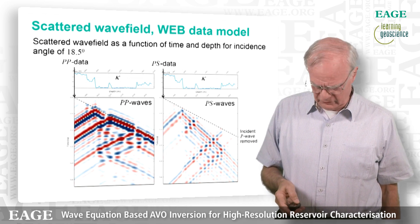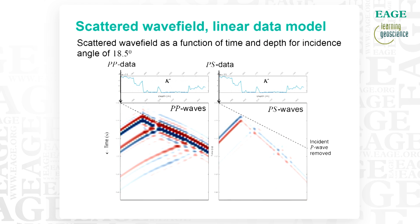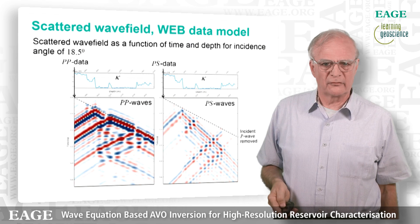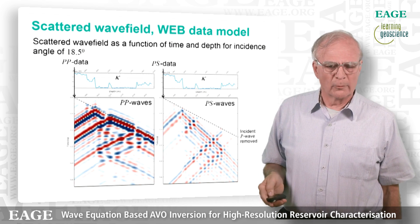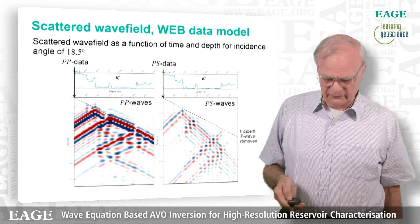If you toggle between these two displays, looking at the PP data — the left-hand side trace — this is for the linear modeling and this is the full wave equation-based modeling. You see a big difference, and if you do your normal linear inversion, you ignore this difference.